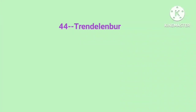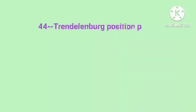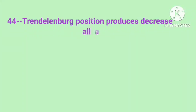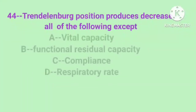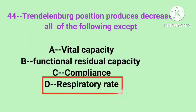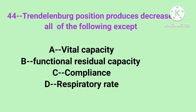Question number 44: Trendelenburg position produces decrease in all of the following except. Correct answer is option D, respiratory rate.